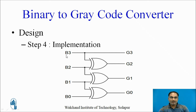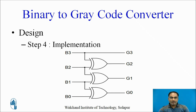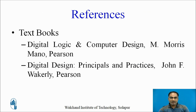In the final circuit: g3 = b3, requiring a direct line from input to output; g2 = b3 XOR b2, so the first XOR gate takes inputs b3 and b2; g1 = b2 XOR b1; and g0 = b1 XOR b0. In any design, implementation is the most important step because we require a minimum number of gates for optimal performance. These are some references for further reading.